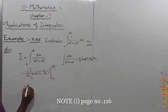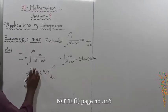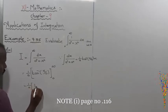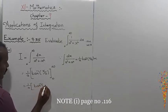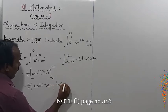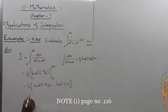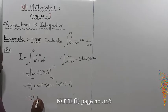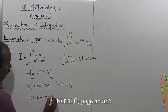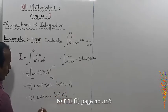So this equals 1 by a into: the upper limit gives tan inverse of infinity divided by a, minus the lower limit tan inverse of 0. That is equal to 1 by a into tan inverse of infinity minus tan inverse of 0. Tan inverse of 0 is equal to 0.